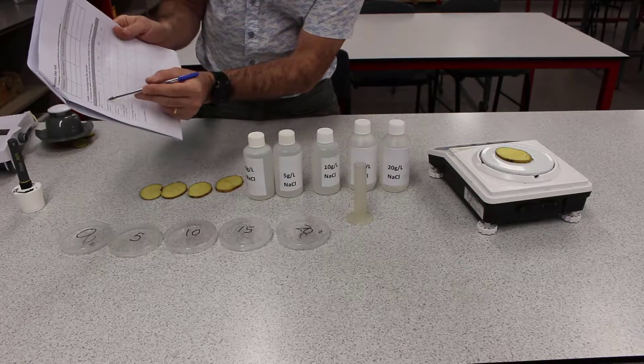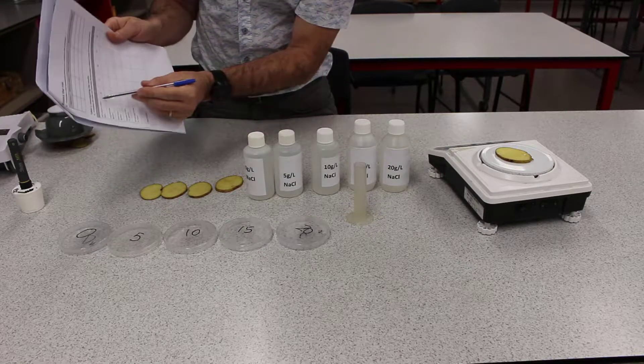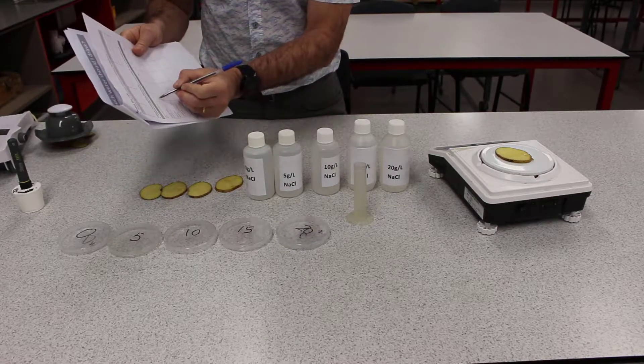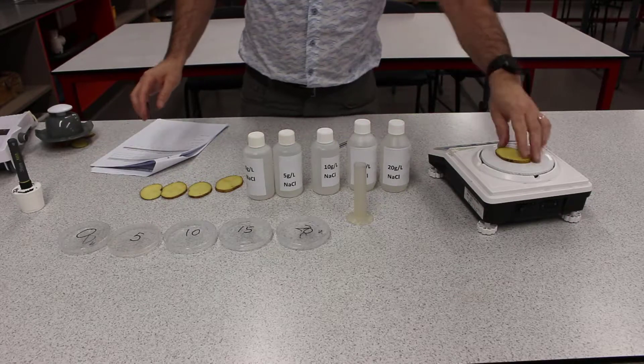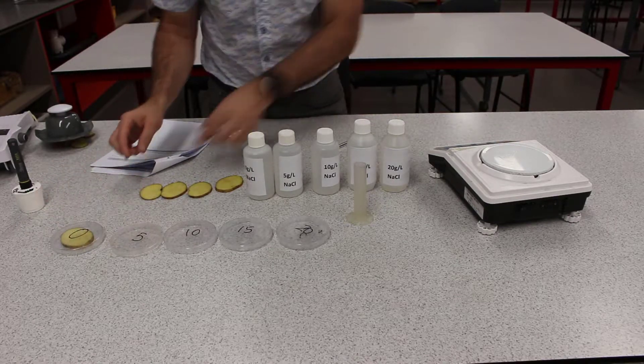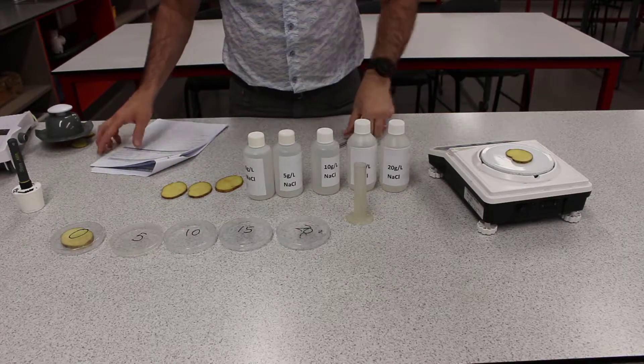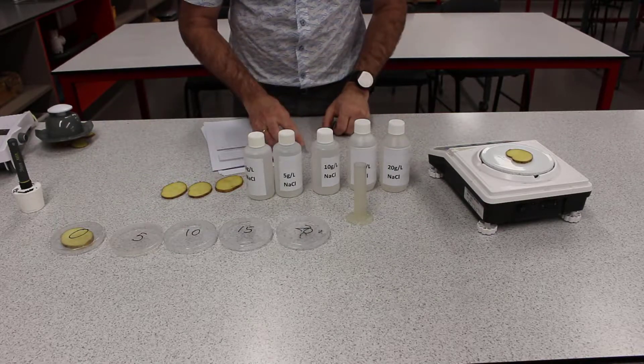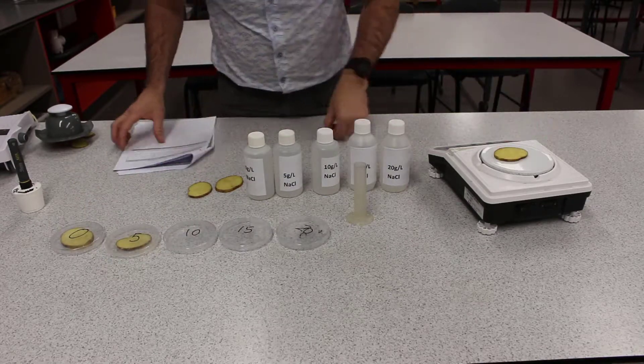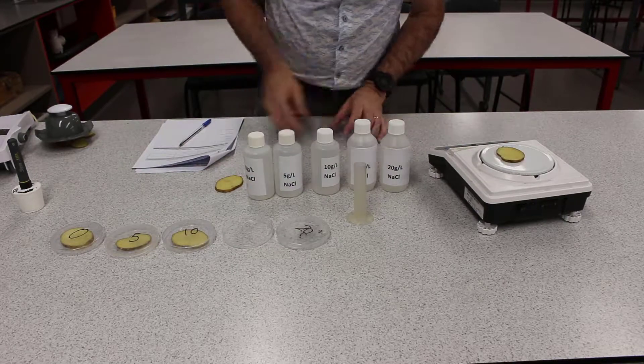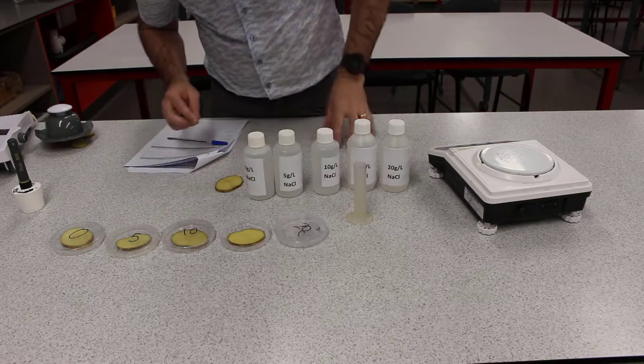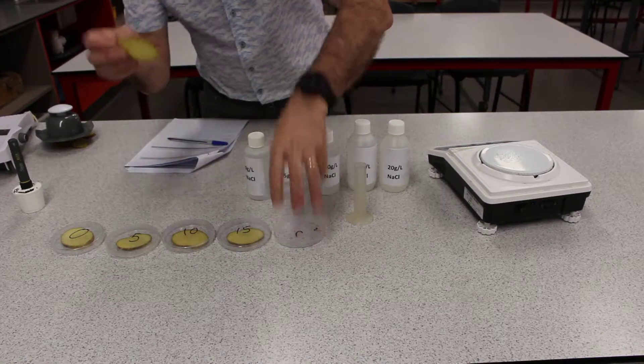So that's going to be the original mass for 0% or 0 grams per litre of salt in the water. Put the mass down and then we're going to put it straight into our dish for the zero. Then we're going to do the same thing for the five. Write down the starting mass and that's going to go on to the five.